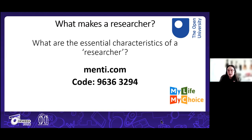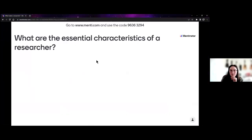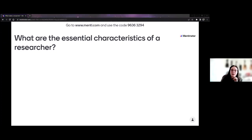Mentimeter is an online platform where we can all put answers in and see the results together. When you get to the website, pop in three terms or words that you think describe the essential characteristics of a researcher. Take a couple of minutes to think about it — what do you need to be or have to be a researcher?